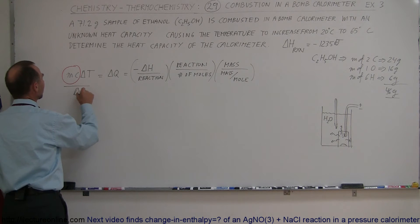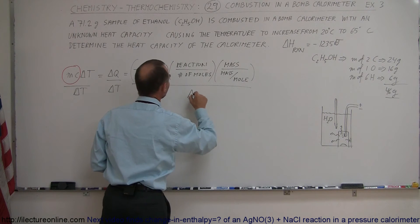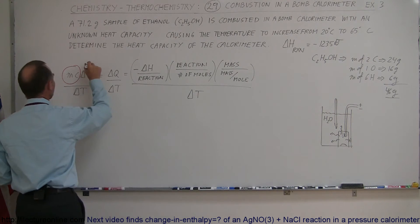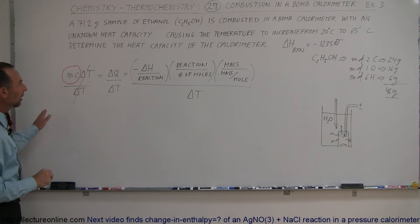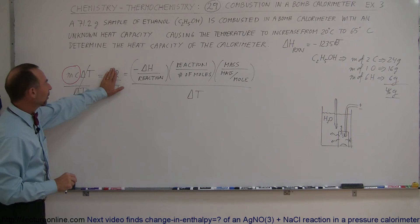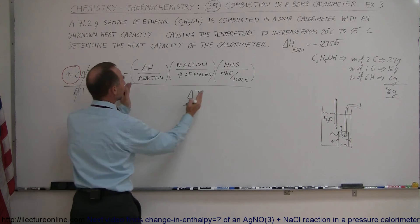So we're going to divide this by delta T, this by delta T, and we're going to divide the whole thing here by delta T. And so when that cancels out, we're left with just the MC, the heat capacity of the calorimeter on the left side. Now we're going to set this equal to this.